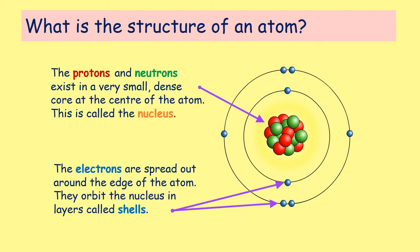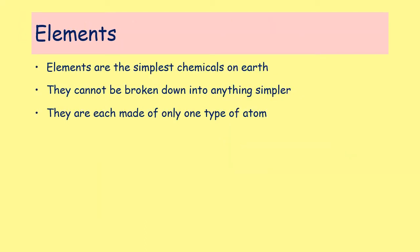So the nucleus has protons and neutrons, and the electrons are outside in shells. The electrons move very, very quickly, whereas the protons and neutrons don't move at all inside the nucleus. All things are made up of atoms, but atoms can be different from one another, and where we have different atoms, this leads to the formation of elements.